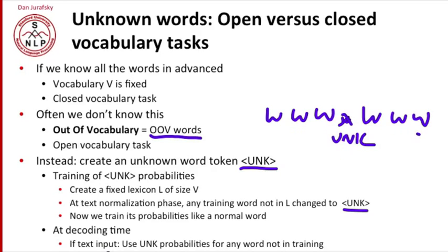And now at decoding time, if you see a new word you haven't seen, you replace that word with unk and treat it like get its bigram probabilities and its trigram probabilities from the unk word in the training set.